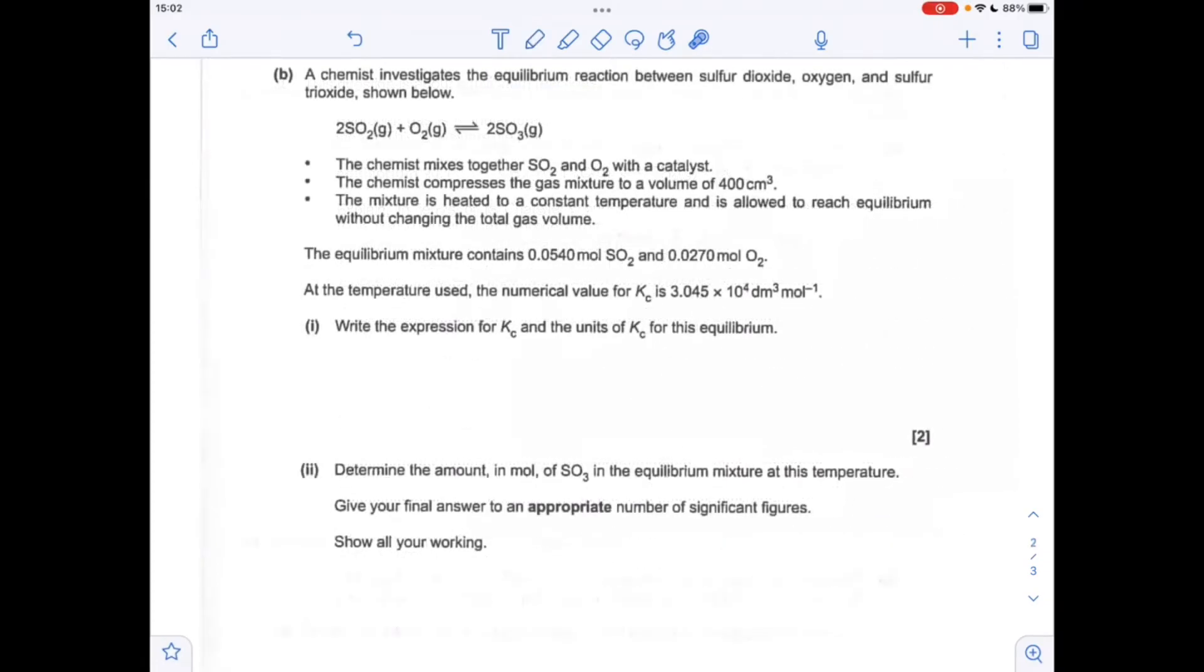Moving on to part B, you've got to write the Kc expression and state the units for Kc for this equilibrium. Remember, all equilibrium constants have the products on the top, the reactants on the bottom, and the balanced numbers become powers. For Kc, everything needs to be in square brackets because we're dealing with equilibrium concentrations.